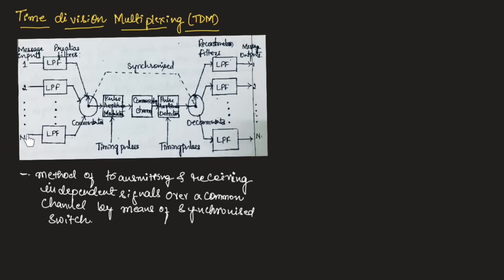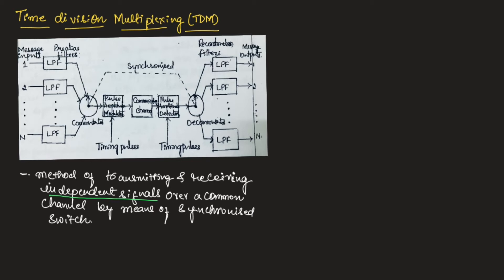As you can see in this block diagram, we have independent signals transmitted and received over a common channel by means of synchronized switch at the end of the transmission line. The block diagram of the TDM system includes multiple input signals, a low pass filter (pre-aliasing filter), a commutator, pulse amplitude modulator, communication channel, pulse amplitude detector, decommutator, and a low pass filter (reconstruction filter), finally producing the output messages.